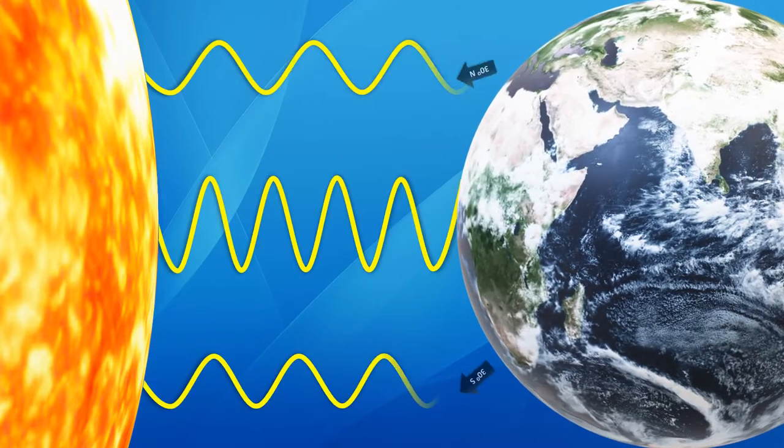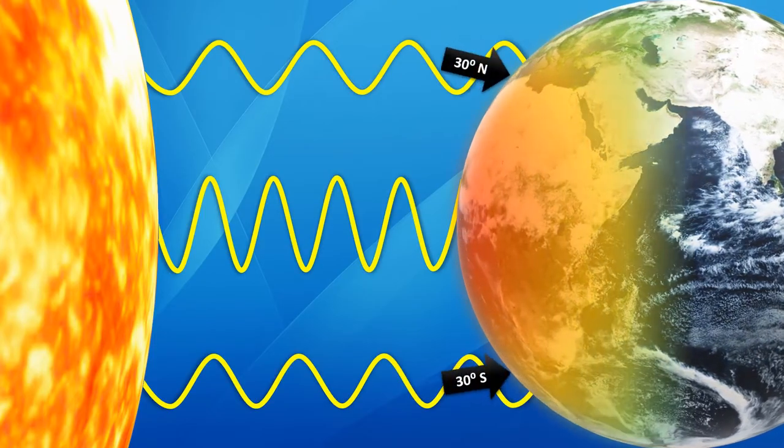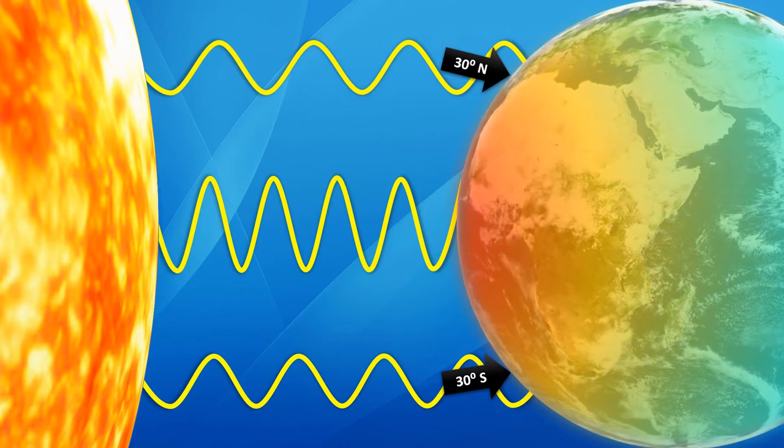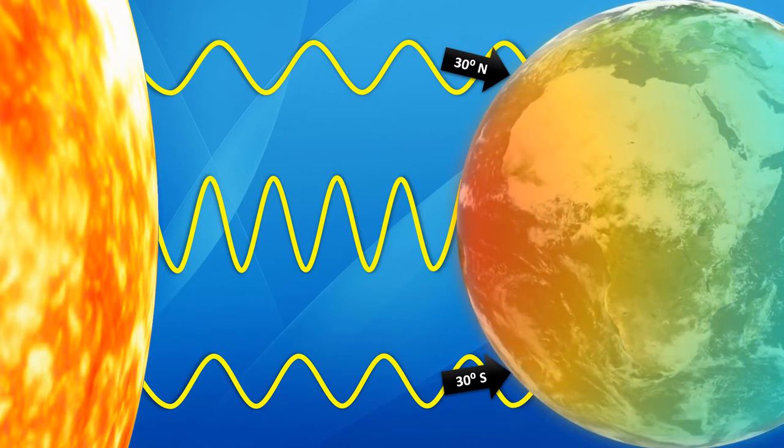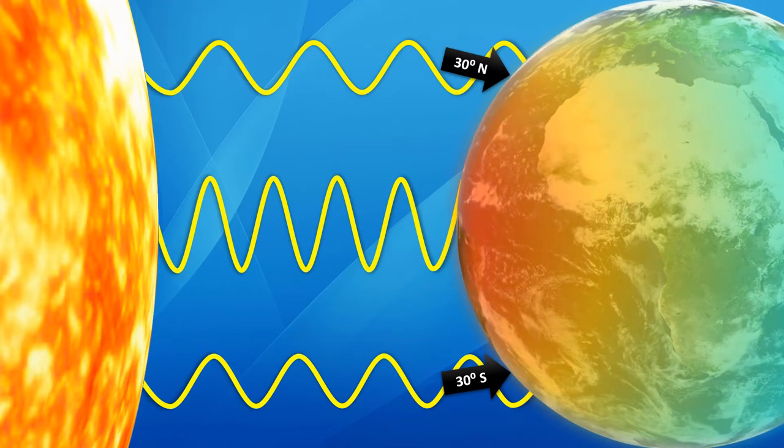Second, the Earth is heated unevenly. The areas closest to the Sun will be warmer than areas further away.